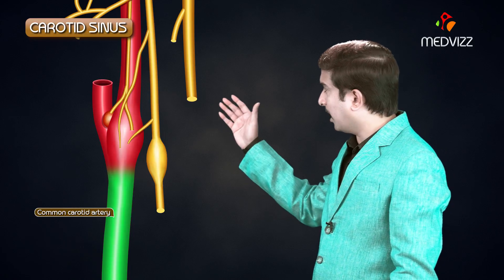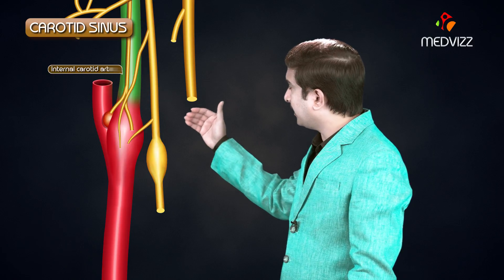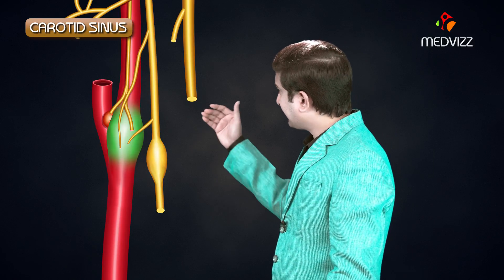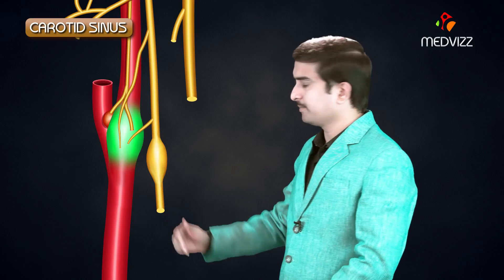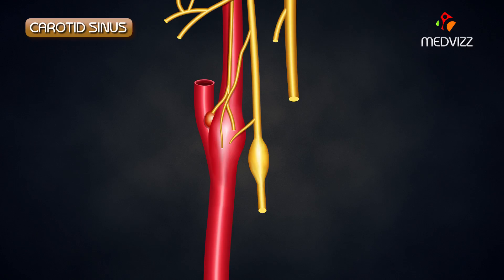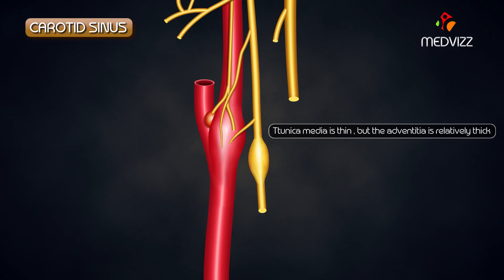The carotid sinus is located at the termination of the common carotid artery, or we can say at the beginning of the internal carotid artery, where there is a slight dilation which is known as the carotid sinus. In this particular region where the carotid sinus is located, the tunica media is extremely thin.